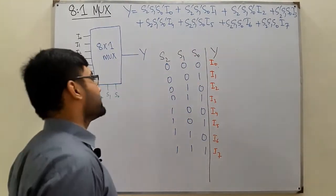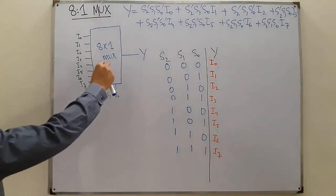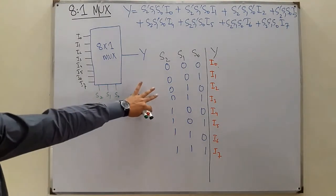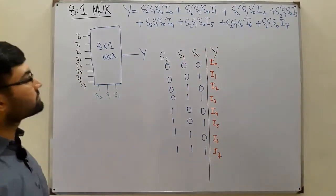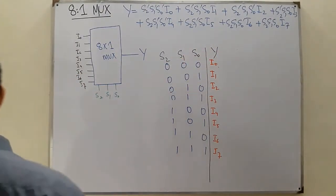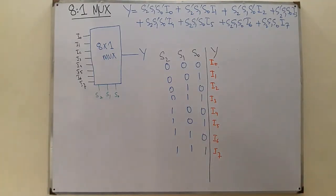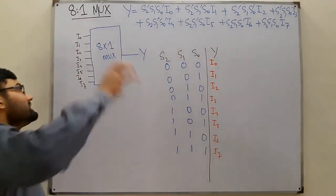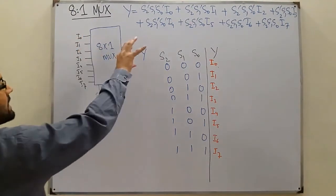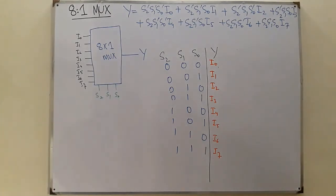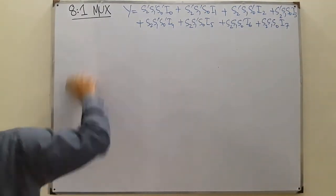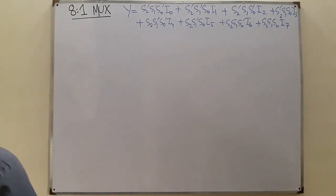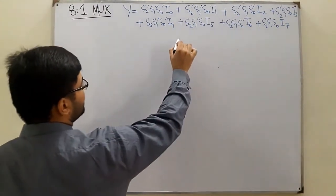Now what is inside this circuitry — the internal logical diagram. We have eight AND gates and one OR gate, plus NOT gates for the complements. So we draw to see what is inside this multiplexer: inputs come in and output Y comes from the OR gate. I need to draw the eight AND gates.